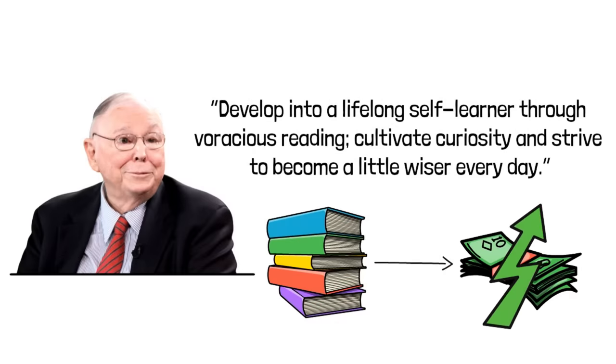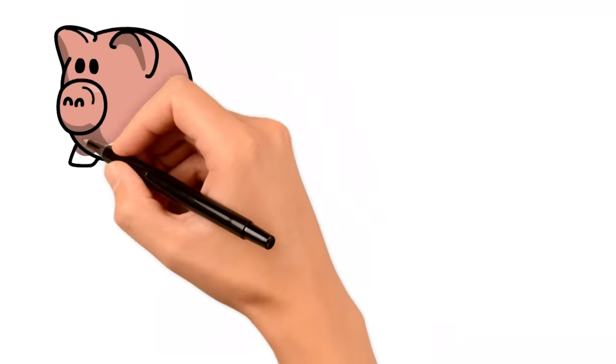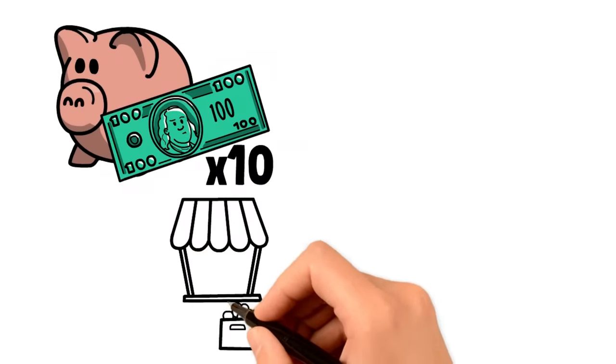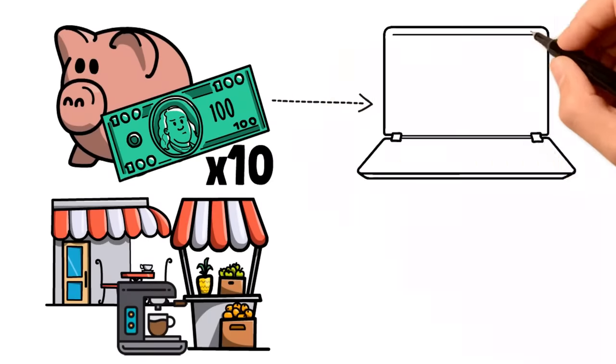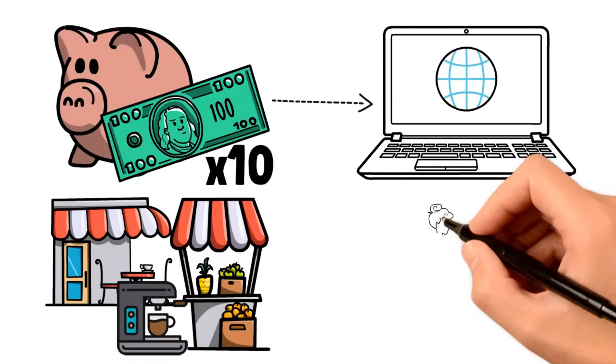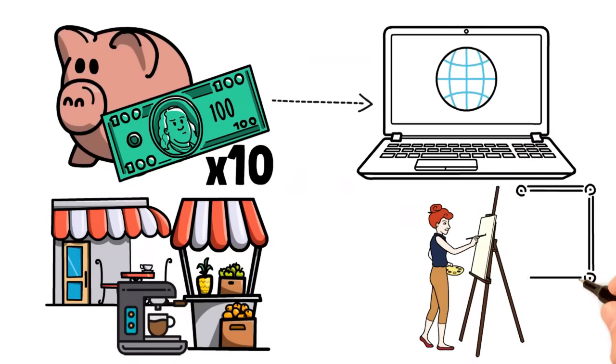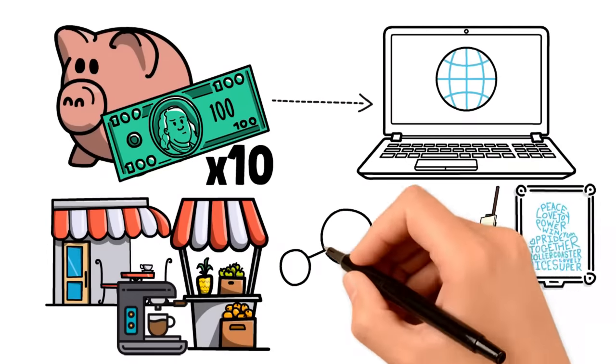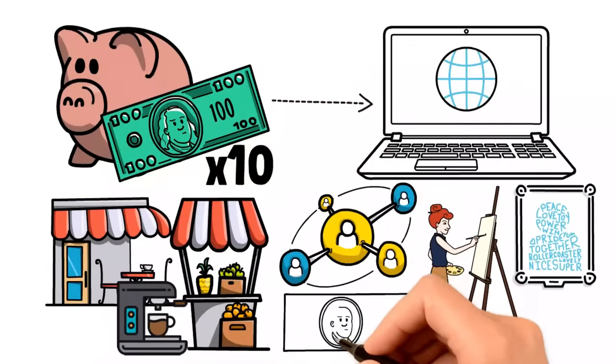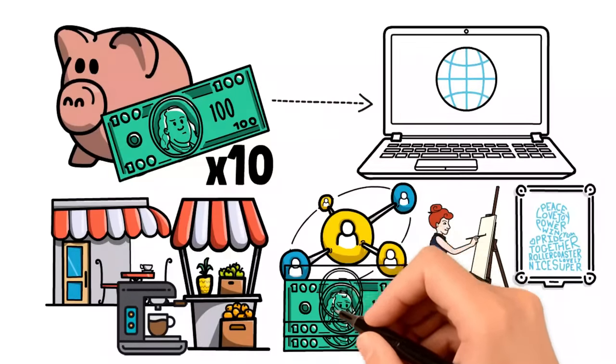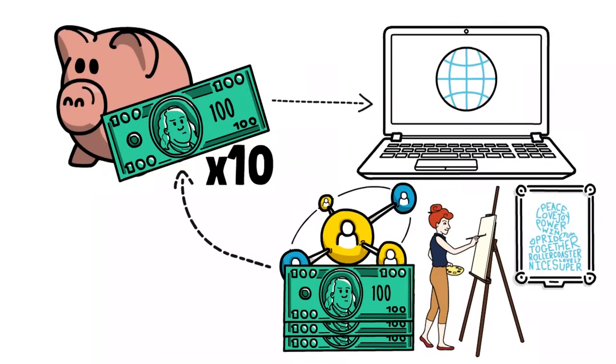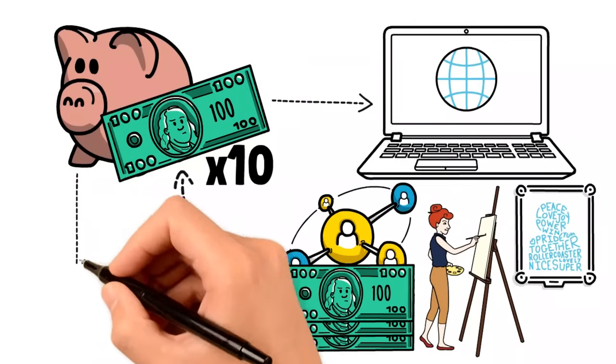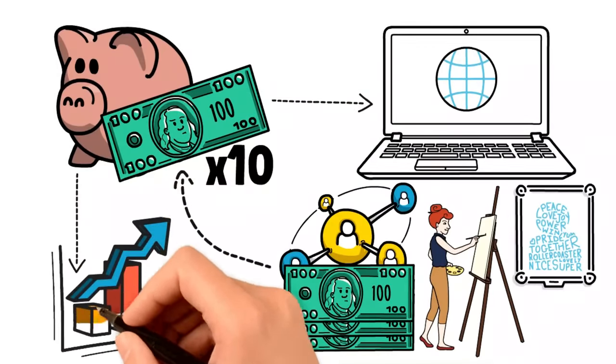The other thing you can do with $1,000 is to work on creating another income source. The great thing about this generation is that it's extremely easy to make another source of income because of the internet. The hard part is doing the work and lifting that business off the ground. However, if you invest in your knowledge, then you can take action to create something with it. Then you can use the money you make from that to either invest in your business to grow it more, and when it makes even more money, you can invest it in the stock market.